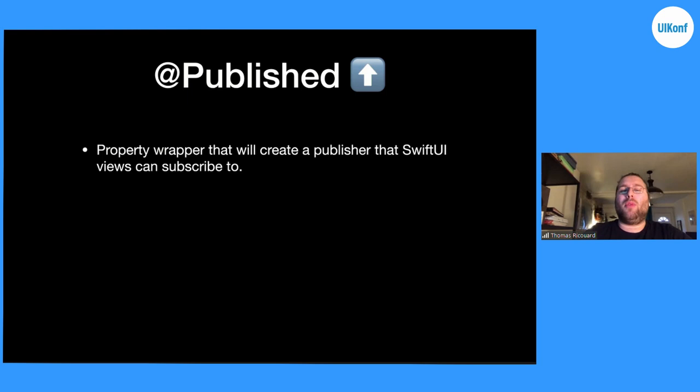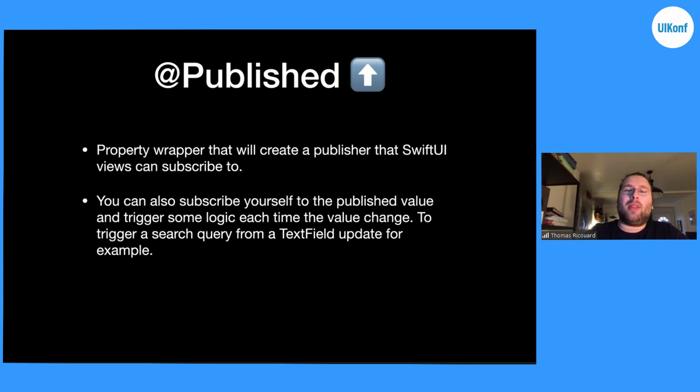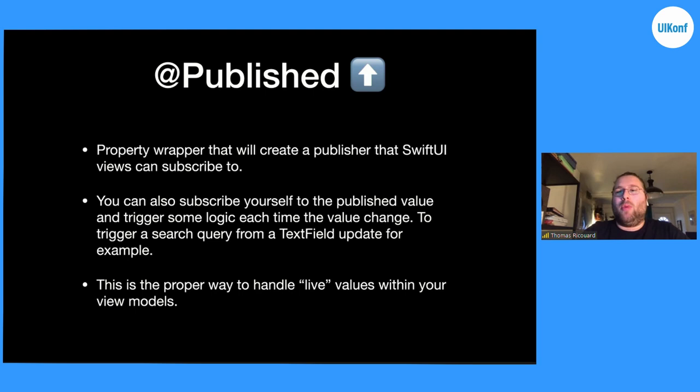We'll push it one step further and look at the Published property wrapper. Published allows you to create a publisher that SwiftUI views can subscribe to. You can also use Published properties yourself and subscribe to the property. For example, if you do a search, you might have a searchText string wrapped into a Published property wrapper. Within your view model, you subscribe to the searchText. Because it's bound to a text field in your SwiftUI view, whenever you get new input values, you will use Combine to fetch from your network API or database and return results as Published properties. This is the proper way to handle a live value within your view model.